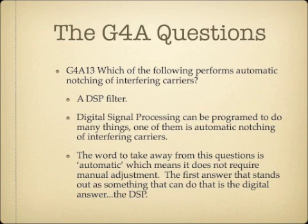Which of the following performs automatic notching of interfering carriers? This is a filter function, and what you're looking for is a DSP filter. The key word here is automatic. Digital signal processing can be programmed to do many things, including automatic notching of interfering carriers, which does not require manual adjustment. The first answer that stands out as something that can operate without manual adjustment is the digital answer: DSP.